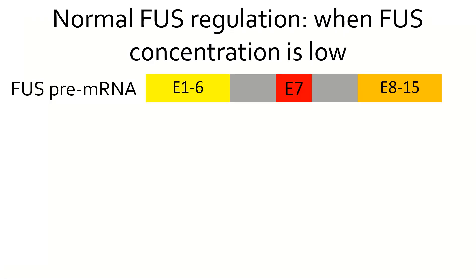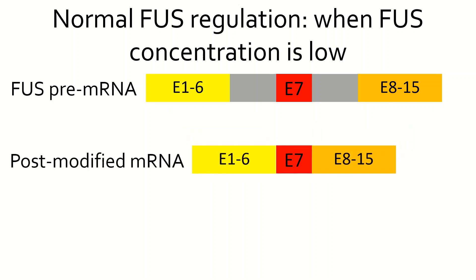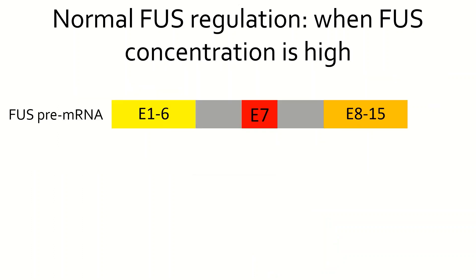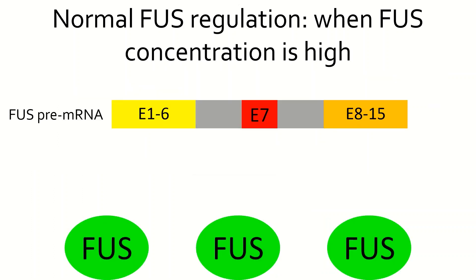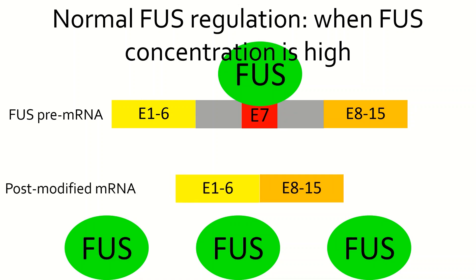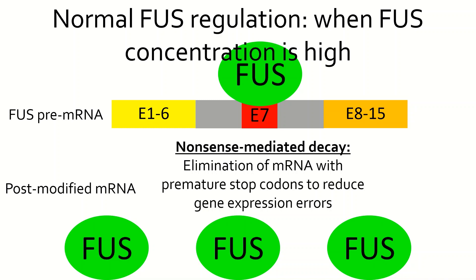When FUS concentrations are low, splicing of pre-mRNA proceeds normally. Exon 7 is included in the final mRNA product, which is translated to produce FUS protein. However, when FUS concentrations in the nucleus are high, FUS binds to exon 7 and the flanking introns of the pre-mRNA, causing exon 7 to be spliced out. The exon 7-deficient mRNA variant is then destroyed in a nonsense-mediated decay mechanism, preventing further expression of FUS.